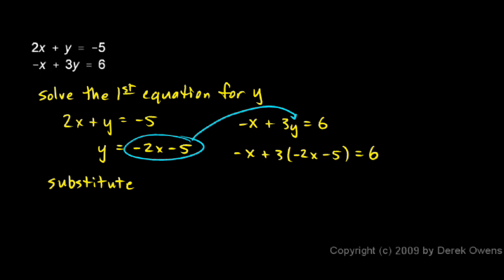Let's start by distributing this 3. So I have this -x plus 3 times -2 is -6x, and then 3 times -5 is -15, equals 6. Now I can combine like terms. The -x and the -6x combine to give me -7x.